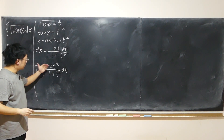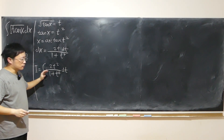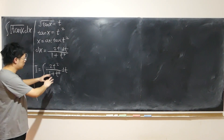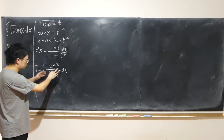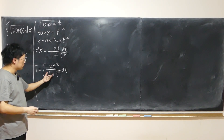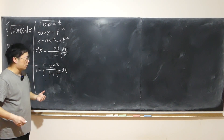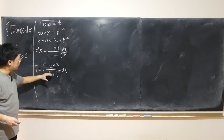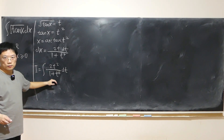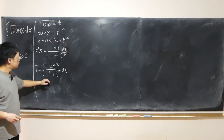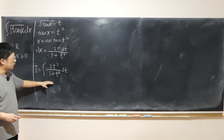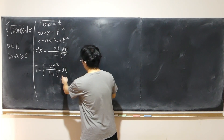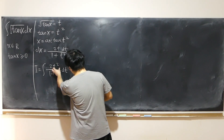We have several different methods. The first method is perhaps partial fractions — factorize the bottom, split into several fractions and determine the constants. That's actually the straightforward method, which I also recommend. But here we use a different method: divide everything by t squared, top and bottom.